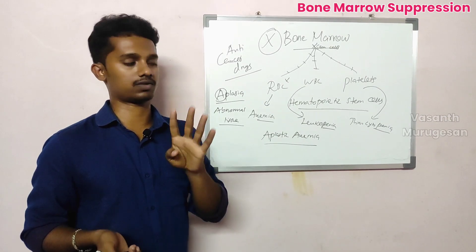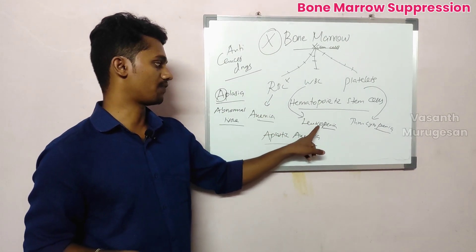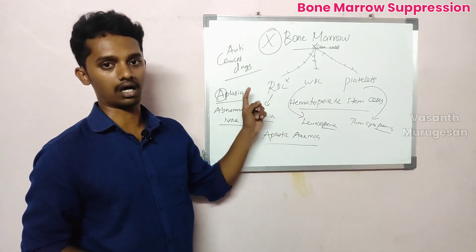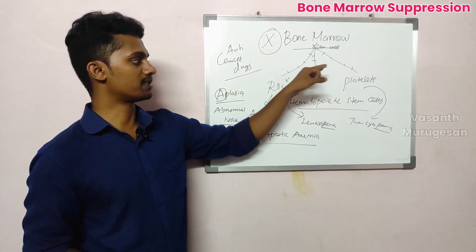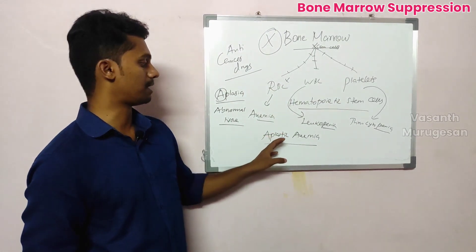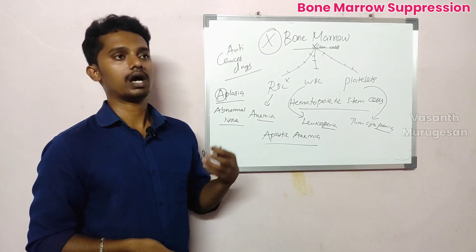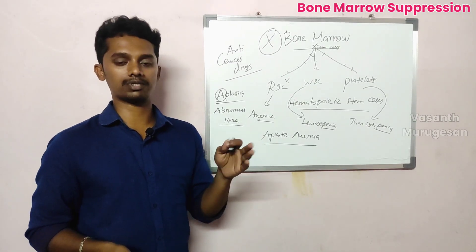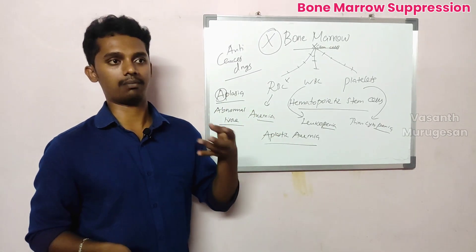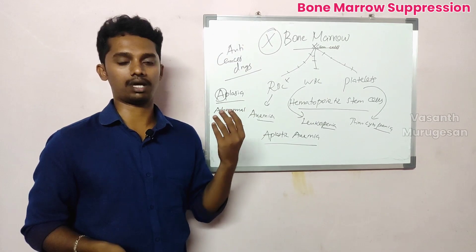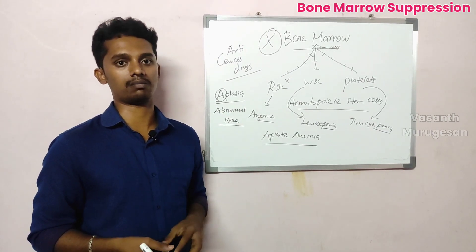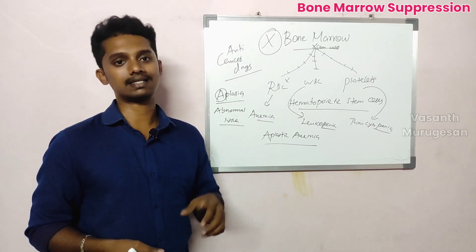We have four conditions: anemia, leukopenia, thrombocytopenia — RBC low, WBC low, platelet low — as well as aplastic anemia. There are many types of anemia: aplastic anemia, hemolytic anemia, megaloblastic anemia, iron deficiency anemia, pernicious anemia, and sickle cell anemia.